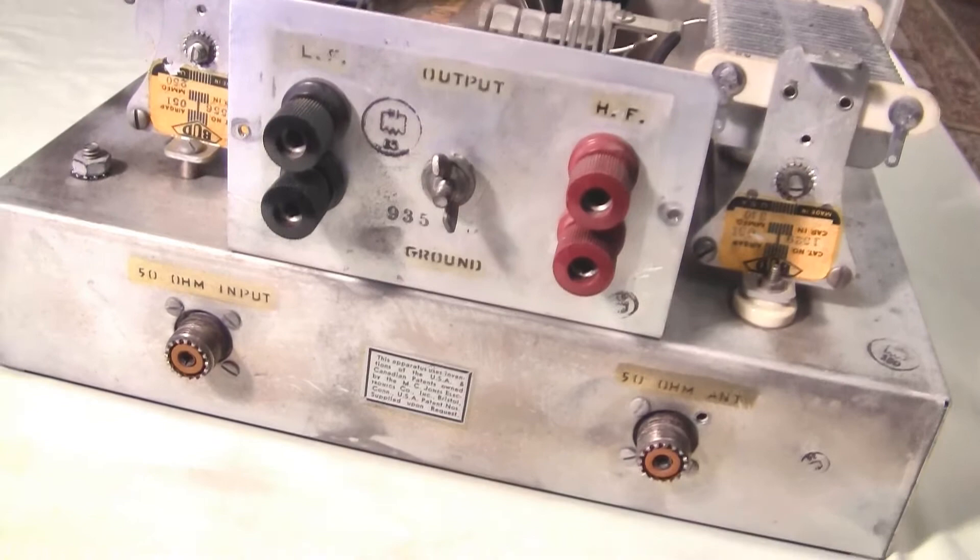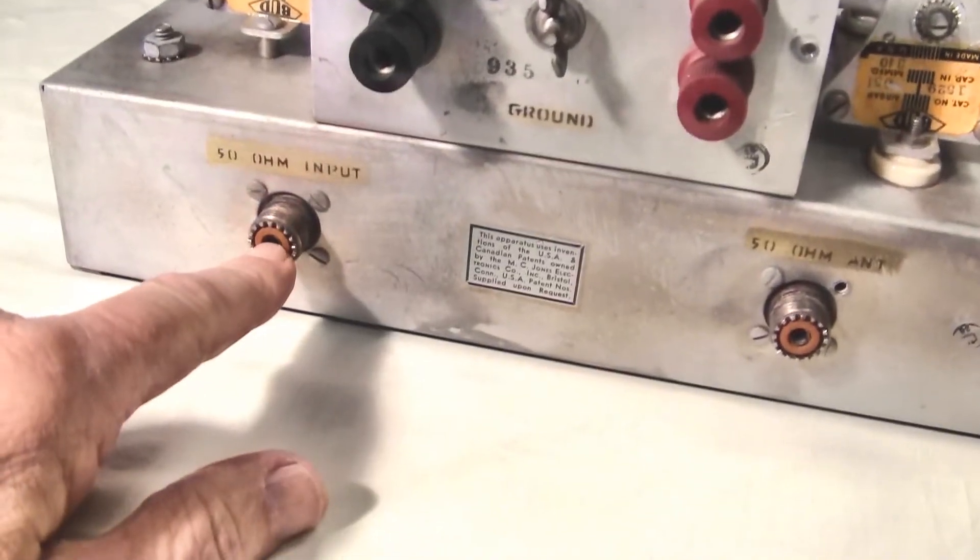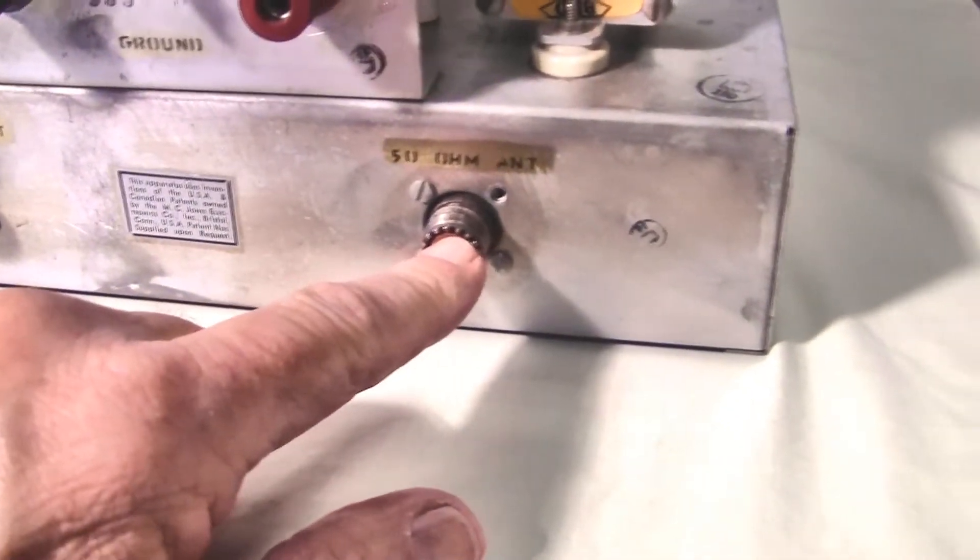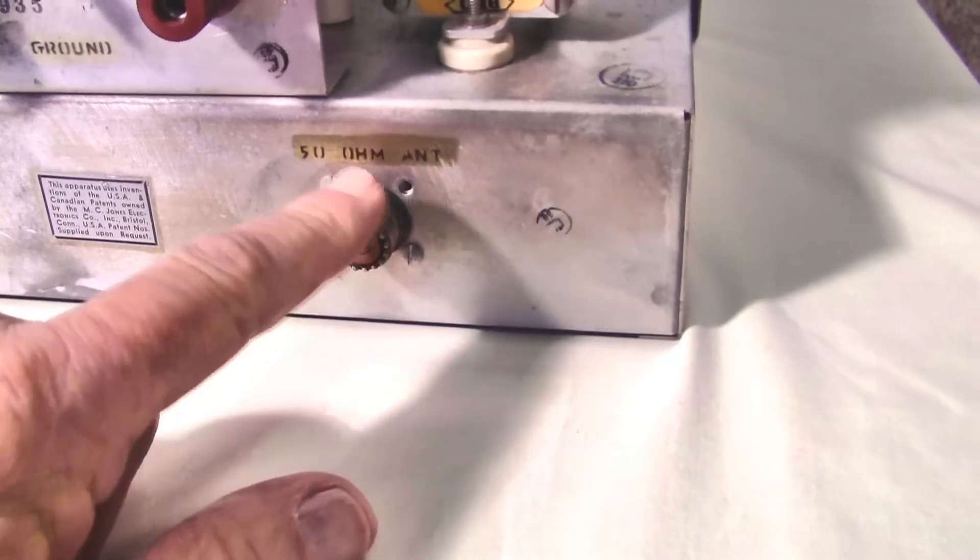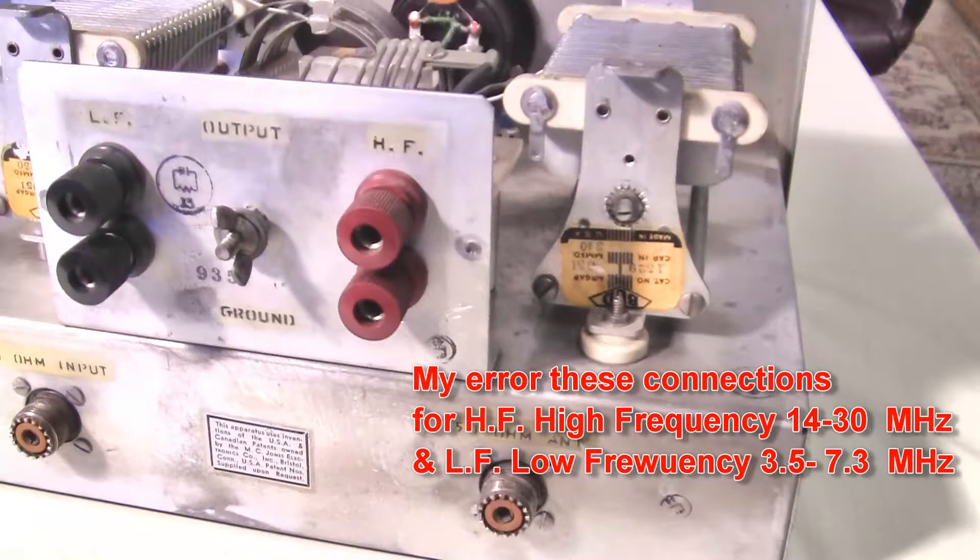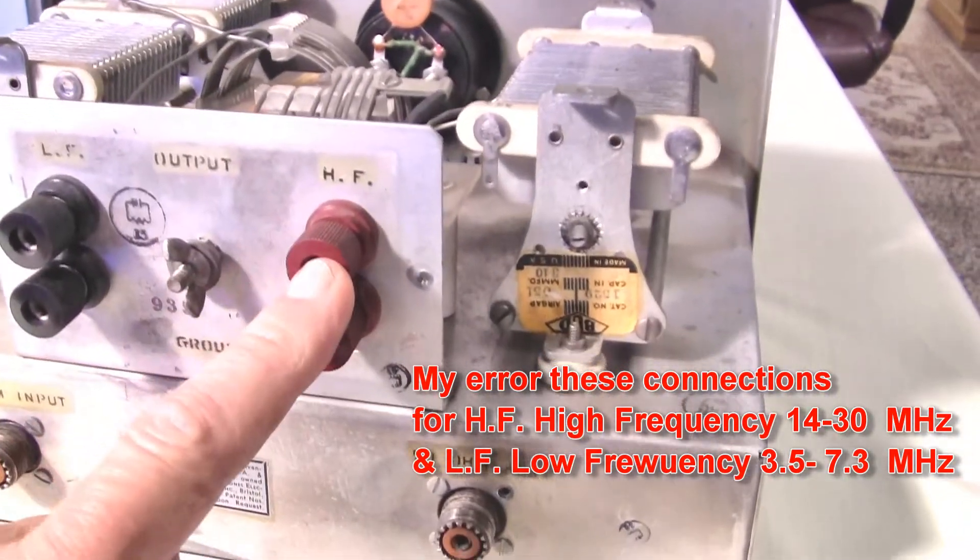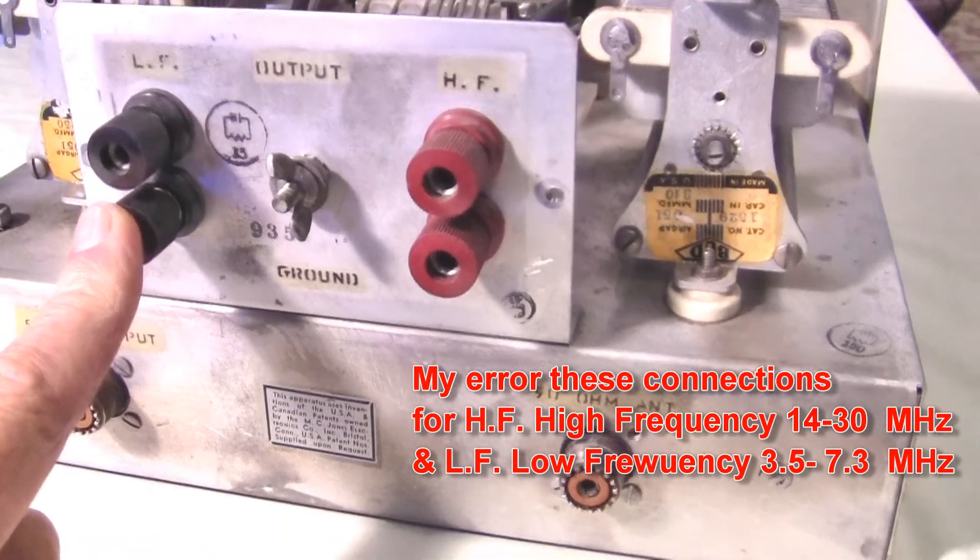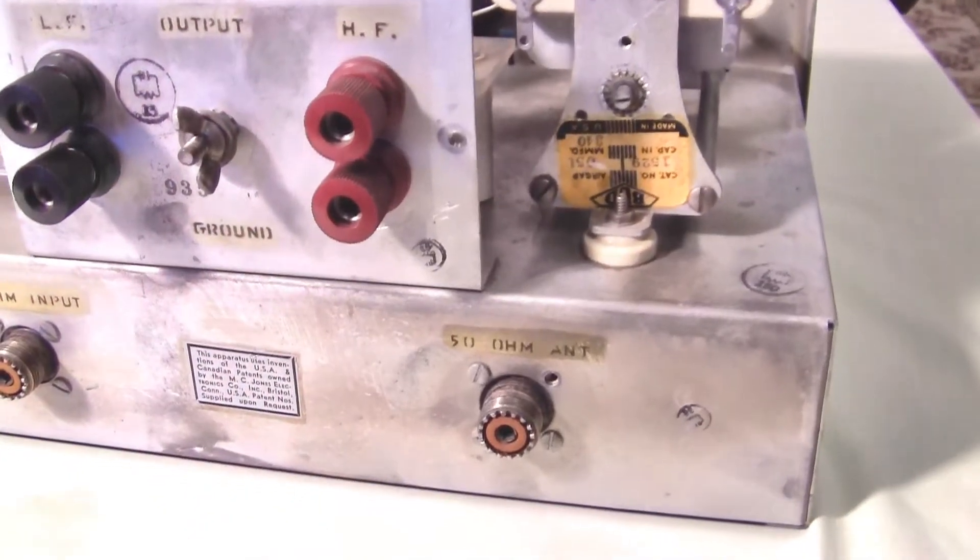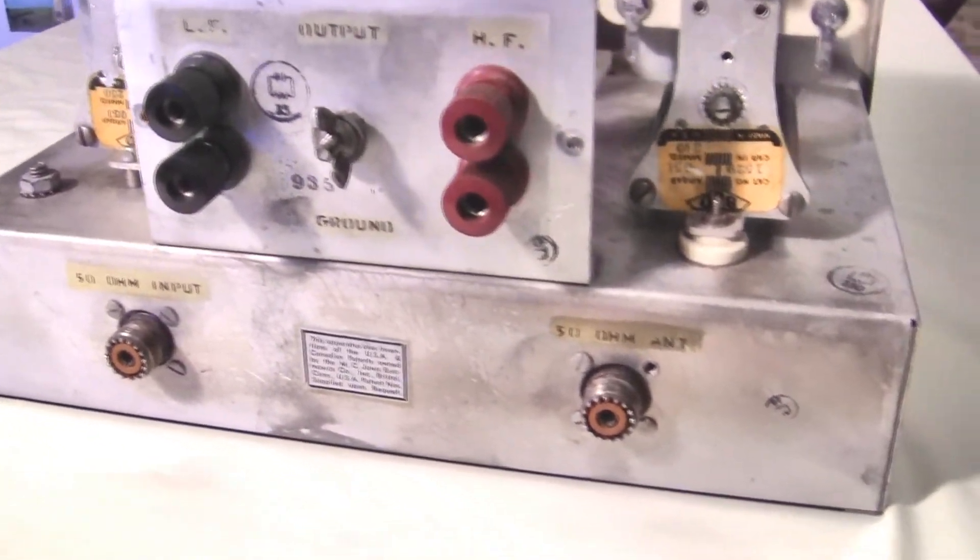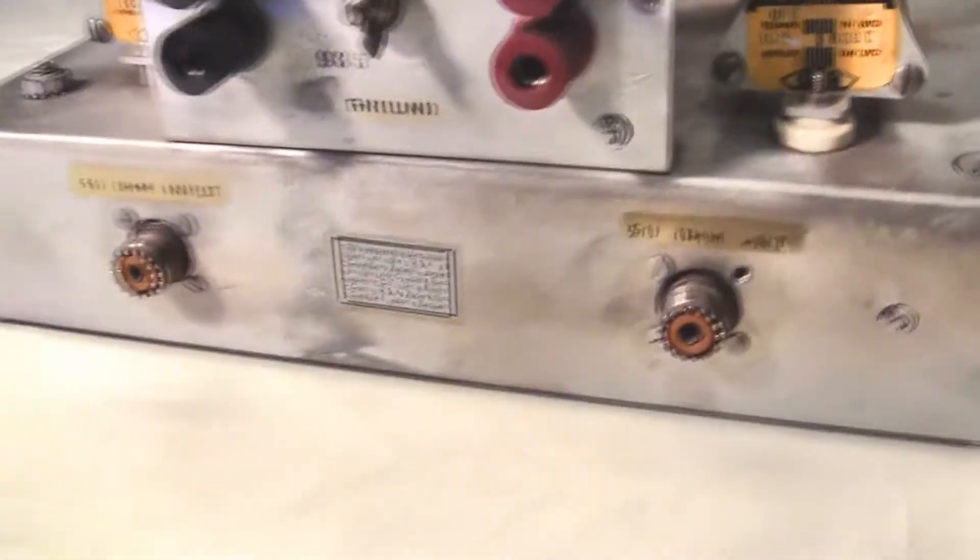Now the back connections are pretty straightforward also. Here's your 50 ohm input from the transmitter, and if you're hooking up a 50 ohm antenna load, you hook it up here, the coax. Using twin lead, you're going to appear for the high impedance and the low impedance, and your ground connection. So those are the connections. The dummy load is inside. We're going to take a look at that in just a minute.